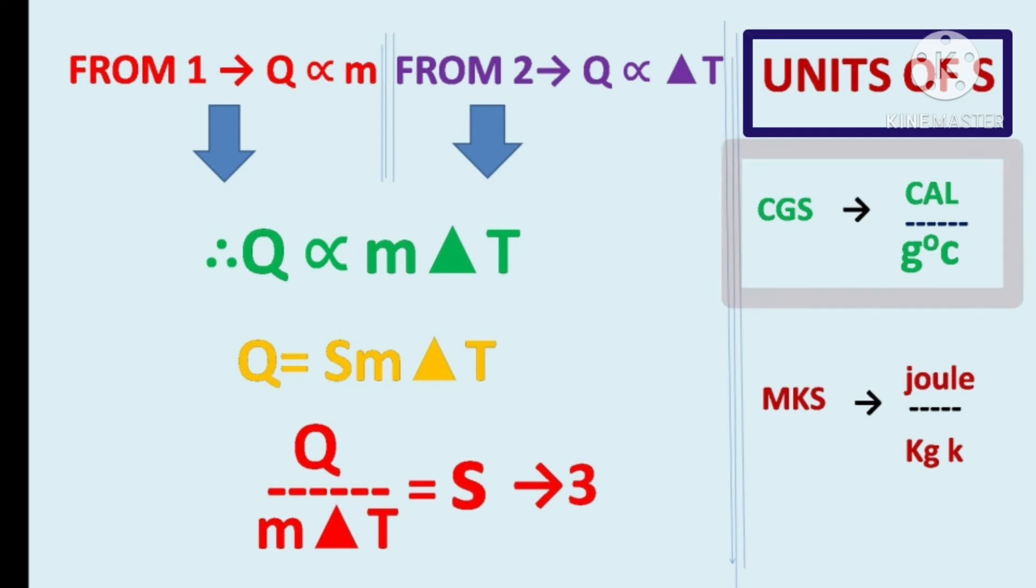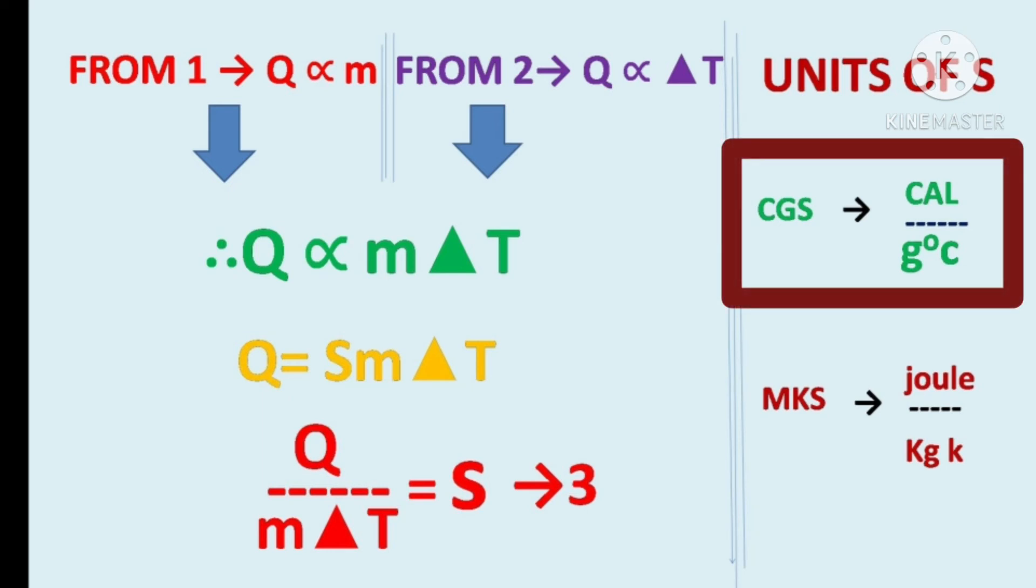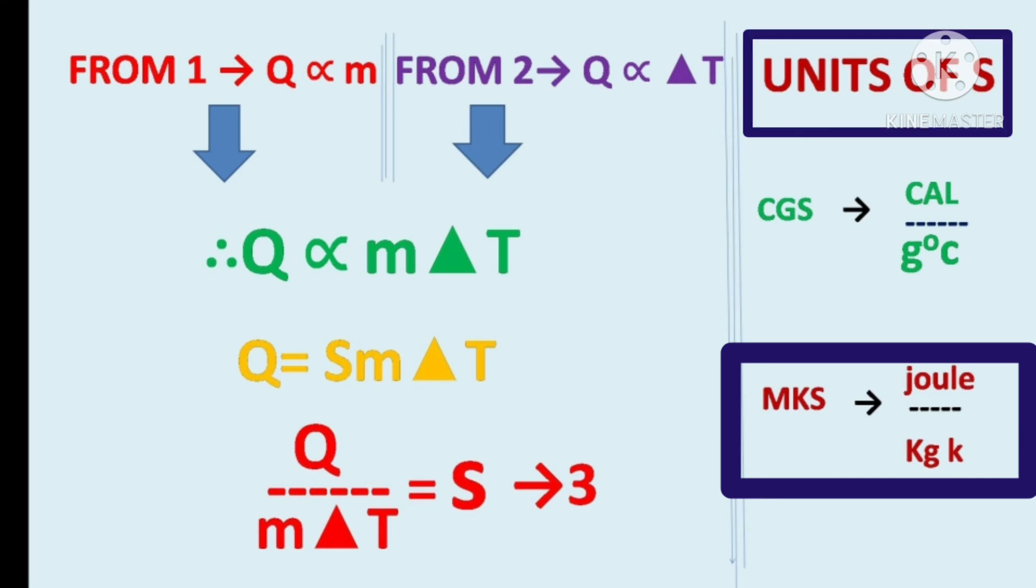Units of specific heat. In CGS, calories per gram degree Celsius. In MKS, joules per kilogram Kelvin.